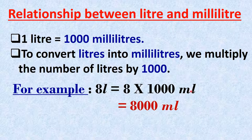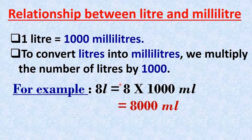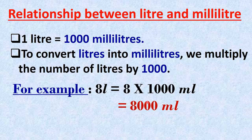We multiply 8 by 1000: 8 ones are 8, then we put three zeros. So 8 multiplied by 1000 equals 8000 millilitres.